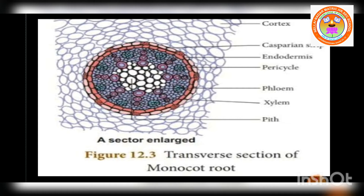The xylem is exarch and polyarch. Exarch means protoxylem faces towards the periphery and metaxylem towards the center. Polyarch means protoxylem points are many. The conjunctive tissue present between the xylem and phloem is made up of sclerenchyma. This is about the vascular tissues in monocot root.